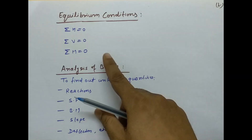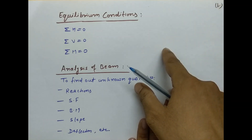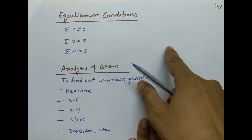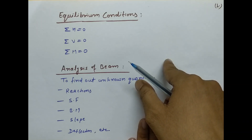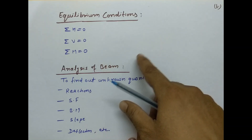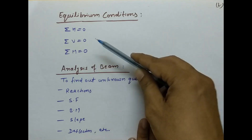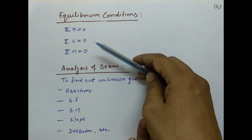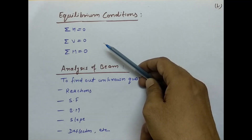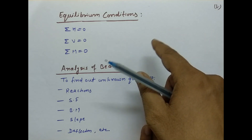Summation of M = 0 का मतलब है कि उस object में forces के वजह से किसी particular point पर जो moments produce हो रहे हैं, उन सब का summation 0 है, यानि net effect 0 है, तो वह object उस point के about rotate नहीं होगा। अगर कोई object इन तीनों conditions को fulfil करता है तो वह equilibrium में है, यानि static है — न vertical direction में movement है, न किसी point के about rotate कर रहा है।